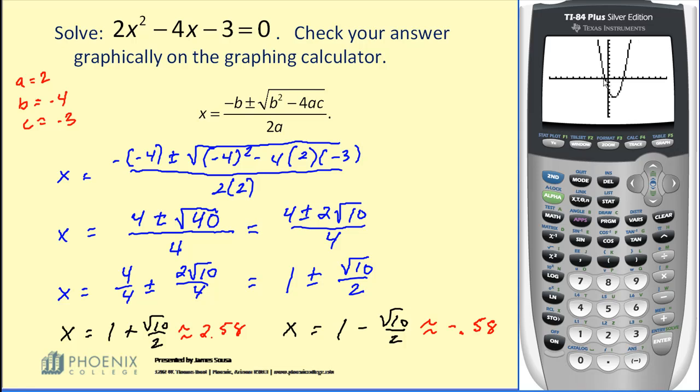Looks like this is somewhere between negative one and zero, maybe negative 0.58, and this one is between two and three. Again, a good sign. Let's just go ahead and verify one of them more specifically.